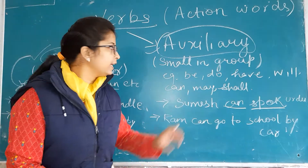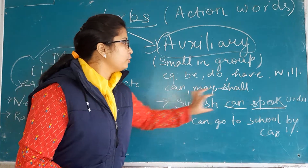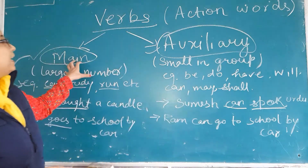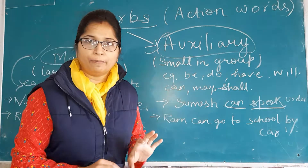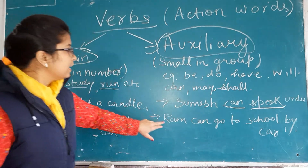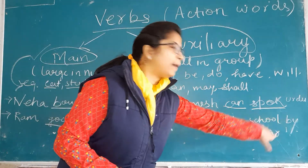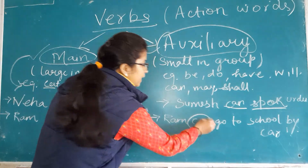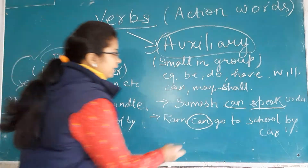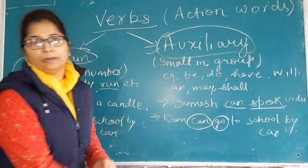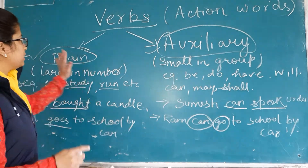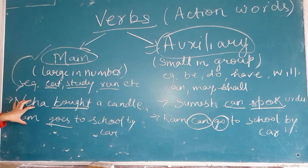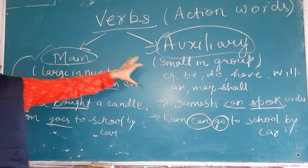Clear? You can take a sentence and underline which one is main verb and which one is auxiliary verb. Next: 'Ram can go to school.' Yaan pe 'can' kya hai? Auxiliary hai. Aur 'go' kya hai? Main verb. Samaj mei aaya — what is main verb and what is auxiliary? Main verb is large in number and auxiliary verb is a small group.